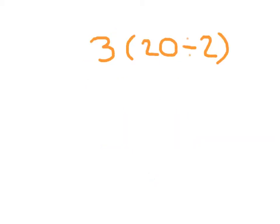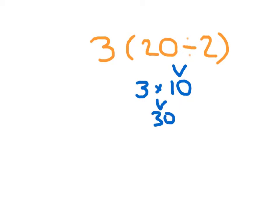We've got this expression again. Remember, parentheses tell us to do that operation first. This is 3 of (20 divided by 2). In math, you don't need a symbol between the number and the parentheses — that's how it works. 20 divided by 2 is 10, and then we have 3 tens. 3 of 10 is 3 times 10, which is 30. You try!